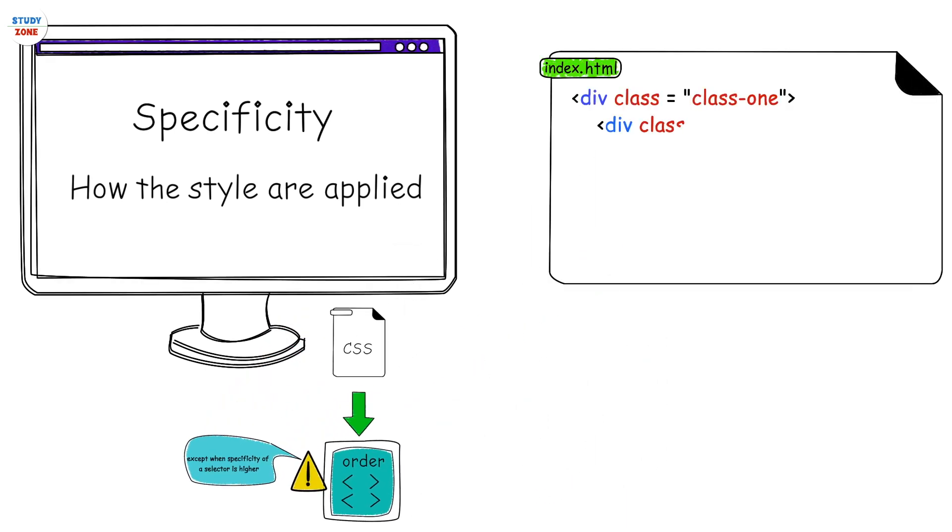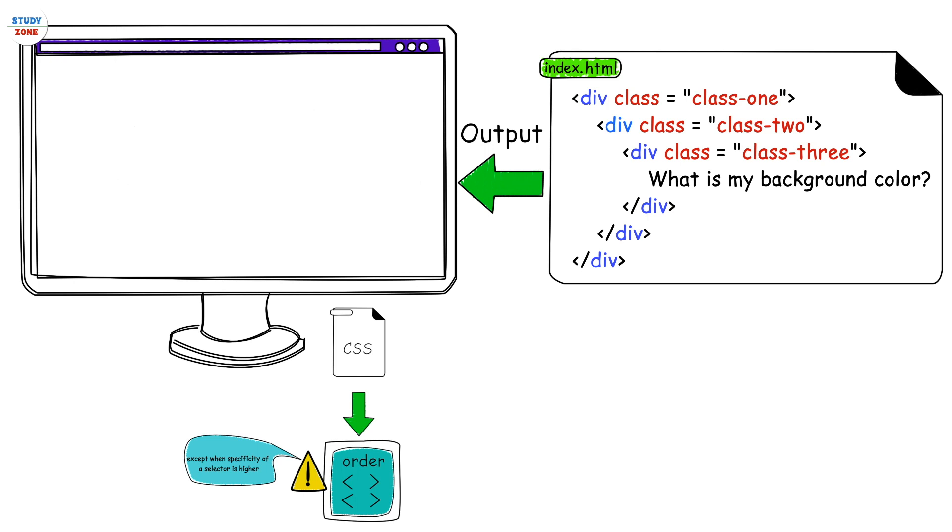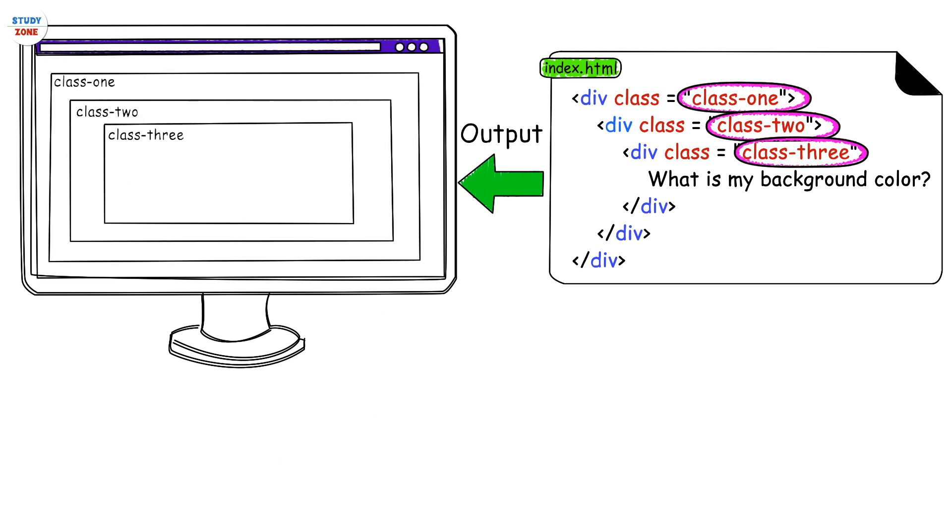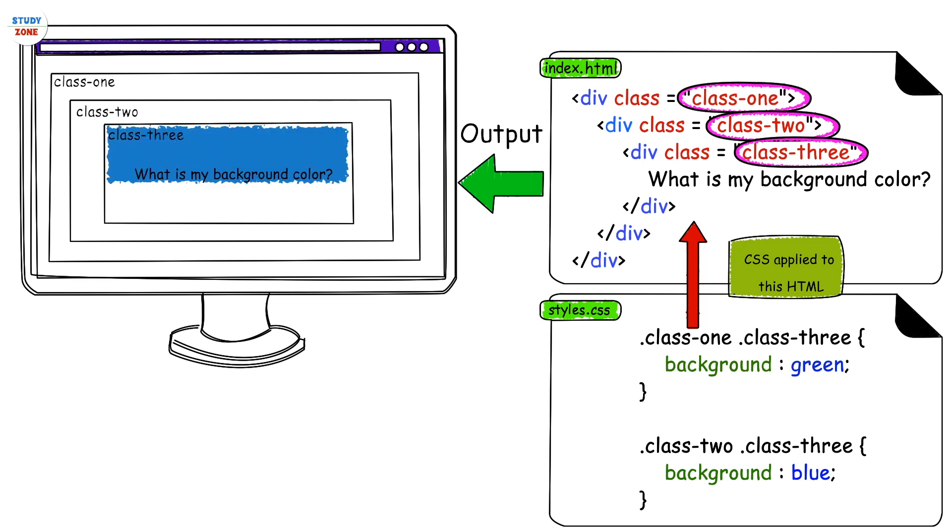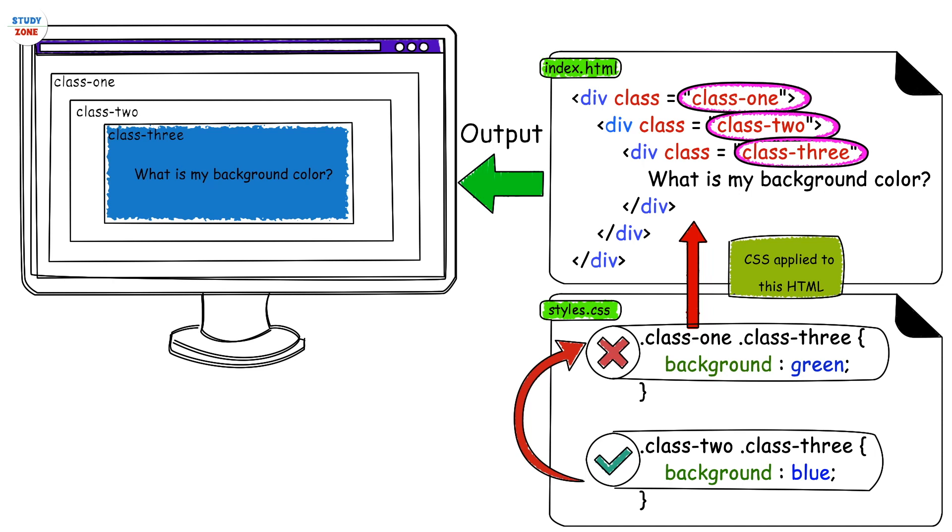To understand this, let's have a look at this example. We have a class-one element, inside we have a class-two, and then class-three which says 'what is my background color'. Let's write the CSS for this: .class-one .class-three background green, .class-two .class-three background blue. The background color of class-three element will be blue because the second selector will override the style of the previous selector.